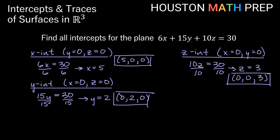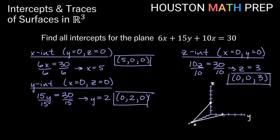We could use all of this information — these three points — since this is a plane, to plot the plane, particularly in the first octant. Using our three intercepts to plot the section of the plane in the first octant: (5, 0, 0) on our x-axis forward 5 units from the origin, (0, 2, 0) right 2 units from the origin on the y-axis, and (0, 0, 3) on our z-axis up 3 units. Once we plot our three points, we can plot the section of the plane in the first octant.